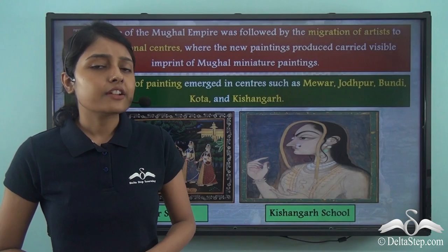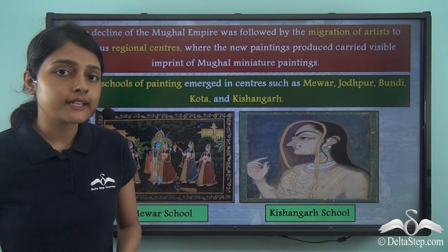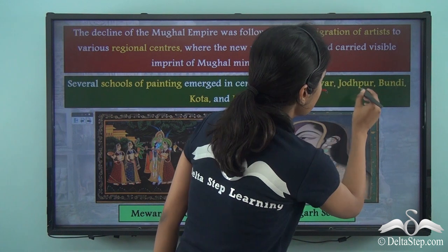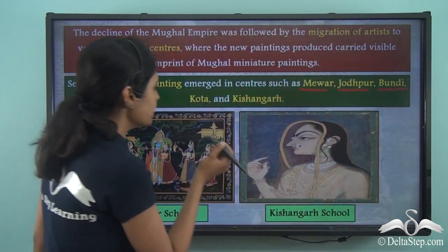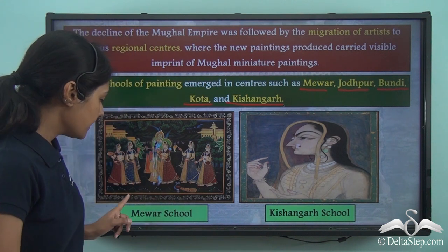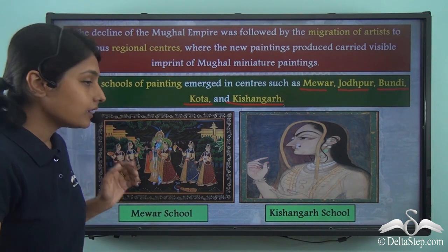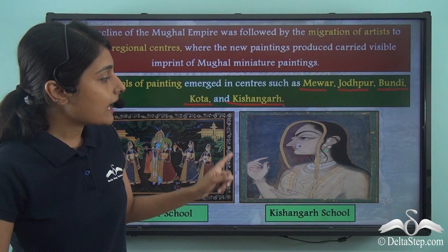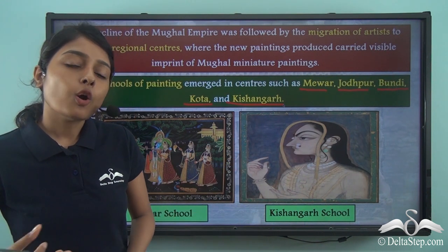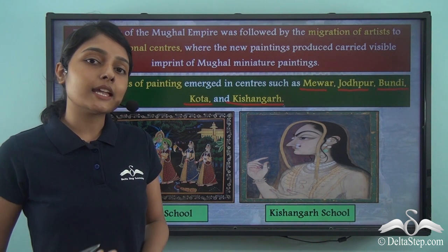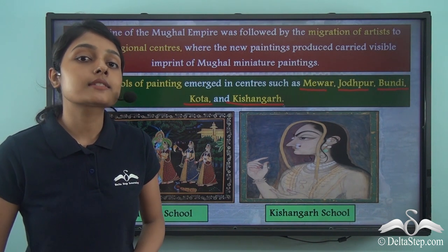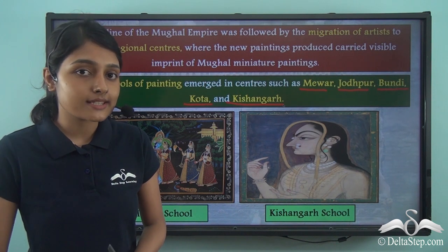Several new schools of painting emerged at centres like Mewar, Jodhpur, Bundi, Kota, and Kishangarh. Here you can see a painting of the Mewar school of painting and a painting of the Kishangarh school of painting. All these schools of painting came into being as a result of Mughal miniature artists moving to different regional centres.